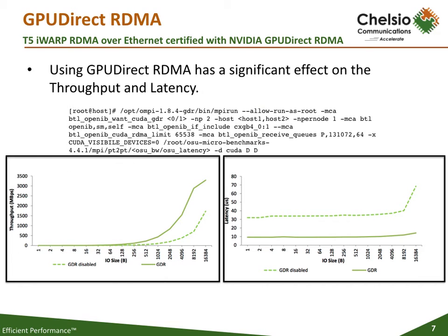This slide shows the effect GPUDirect RDMA has on latency and throughput. As you can see, the throughput increases dramatically at around the 512-byte mark. Perhaps even more impressive is that latency across the whole range drops by two-thirds. We show the command line used here to generate these results for those who may want to try this experiment at home.